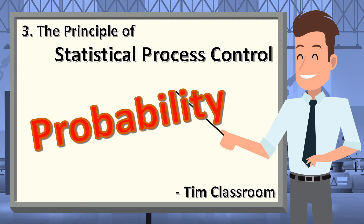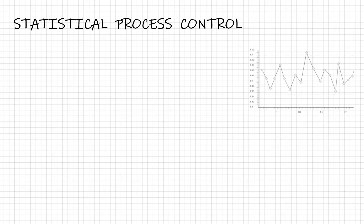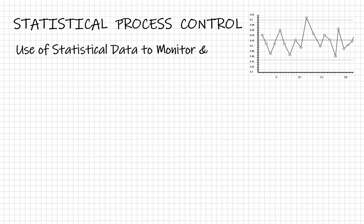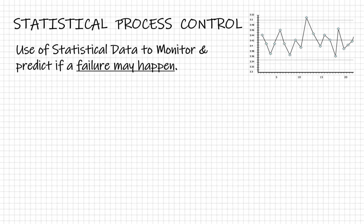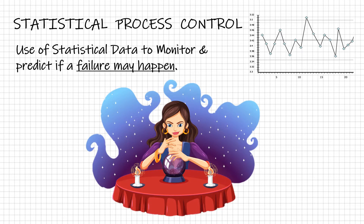In the last video we learned that SPC is a prevention control method, meaning with SPC we can identify beforehand that the process may produce failed parts. This is something like future prediction. To understand this, let's talk about the principle behind SPC.